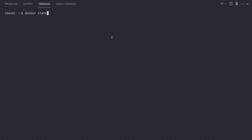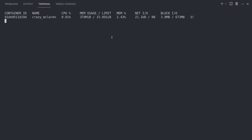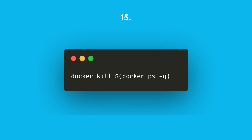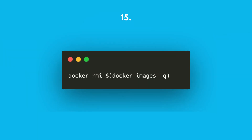Docker stats returns a live data stream for your containers. To limit the data to specific containers, specify a list of container names or IDs separated by spaces. You can also specify a stopped container, but stopped containers obviously don't have any stats. To clean up, you can chain commands by using the output of one as input for another — for example, kill all running containers with docker kill $(docker ps -q), delete all containers including stopped ones with docker rm $(docker ps -a -q), or delete all images with docker rmi $(docker images -q). As a bonus tip, you can also use docker system prune to clean out any images, builds, etc. that might be hanging around, just to be safe.